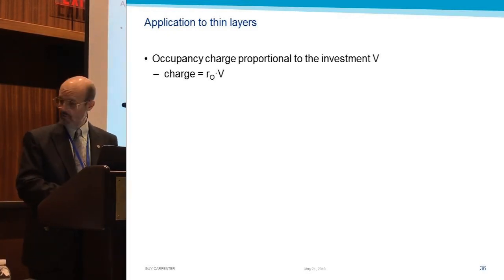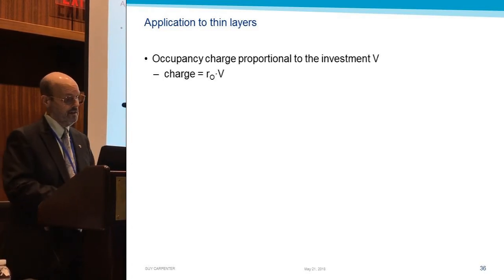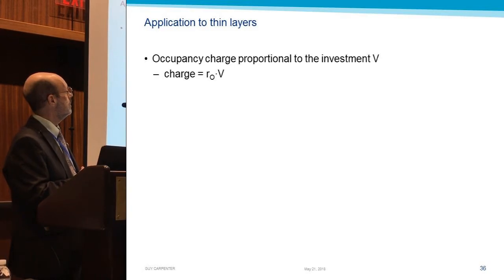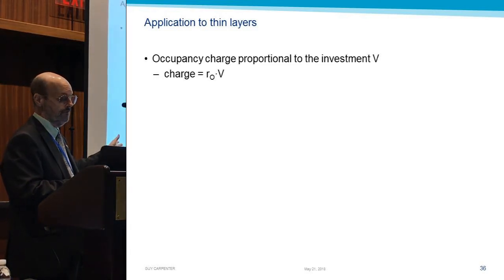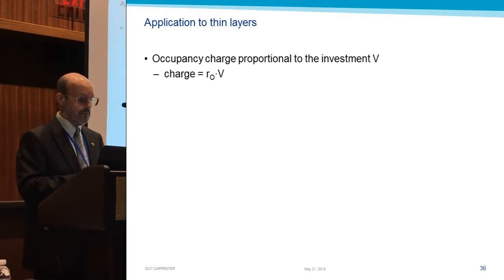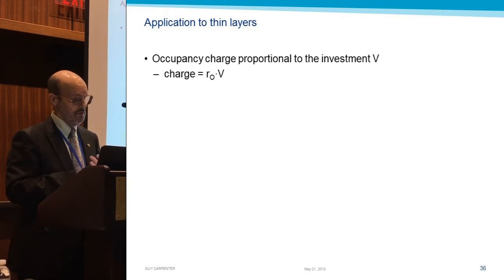So mathematically, those of us who like mathematical models, we're going to say, all right, occupancy charge is simply going to be some rate applied to the investment. Now we're talking about tranches now. So we have a tranche. We already know the probability of loss. We already know from our distortion function what the investor is willing to put in. We're calling that V here. Now the charge is going to be R sub O times V. This is going to be a pretty low number, something like the risk-free rate, but maybe not the risk-free rate.